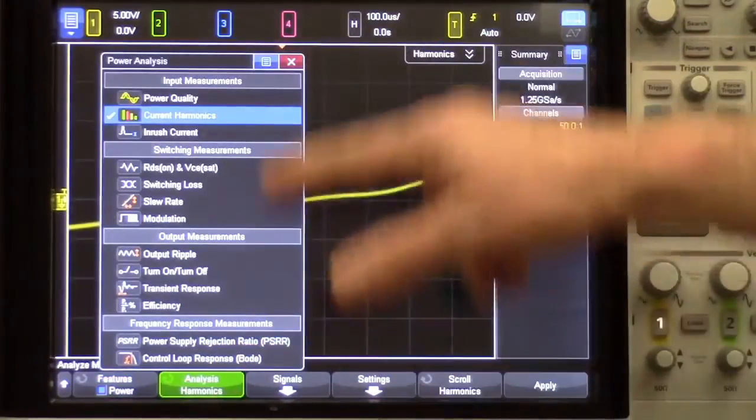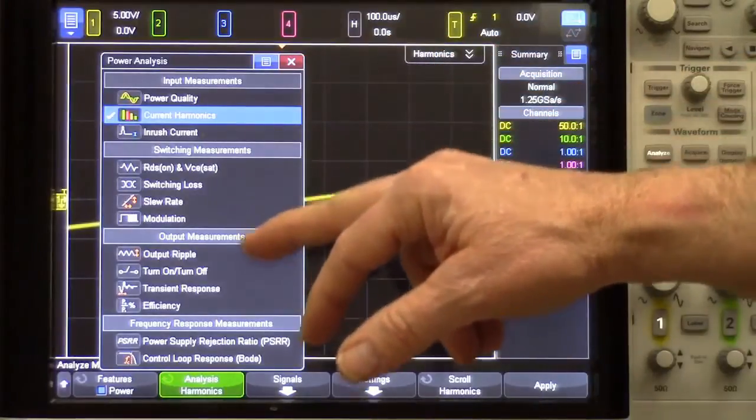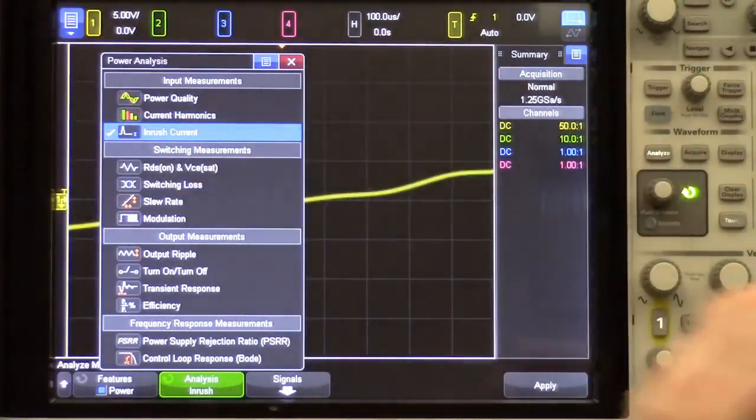Then, I can select which measurement I want to perform. We have videos on all of these particular measurements, but right now we're going to select the inrush current measurement.